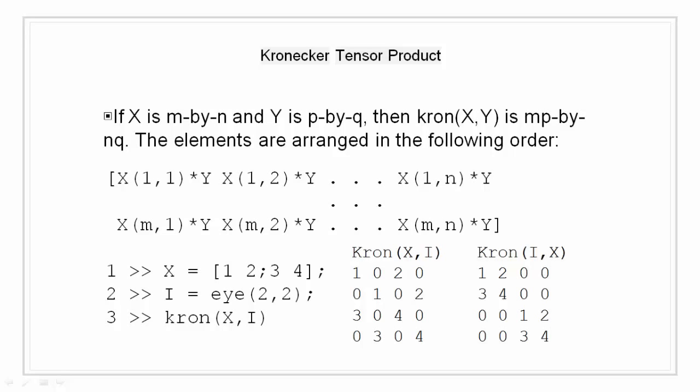The Kronecker product is often used with matrices of zeros and ones to build up repeated copies of small matrices. For example, X is a 2 by 2 matrix of 1, 2, 3, 4. I is an identity matrix of 2 by 2. So kron(X, I) gives us the resulting larger matrix.